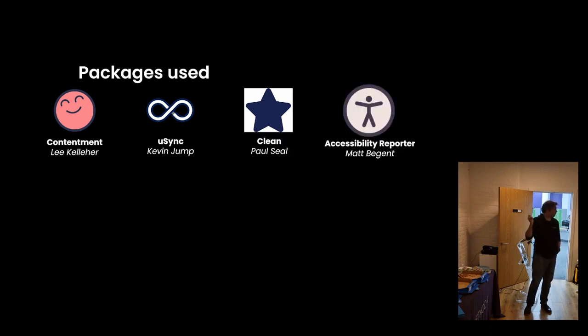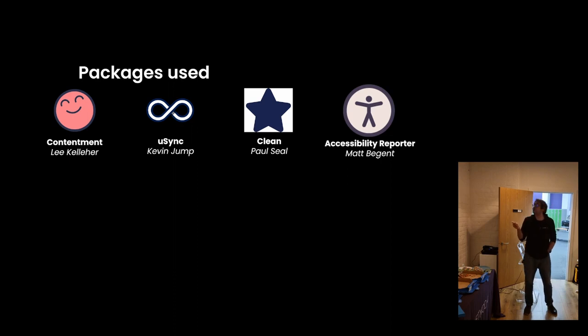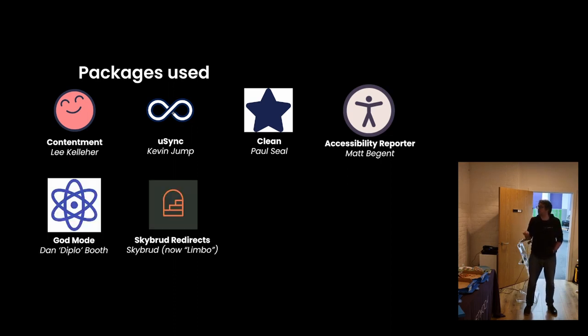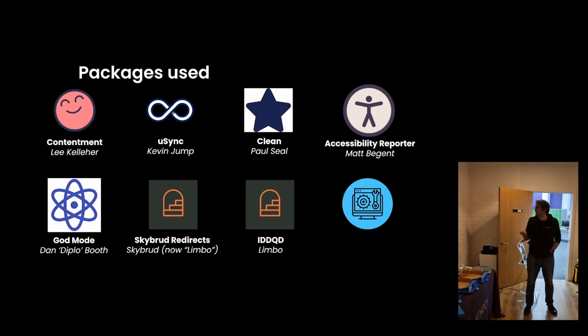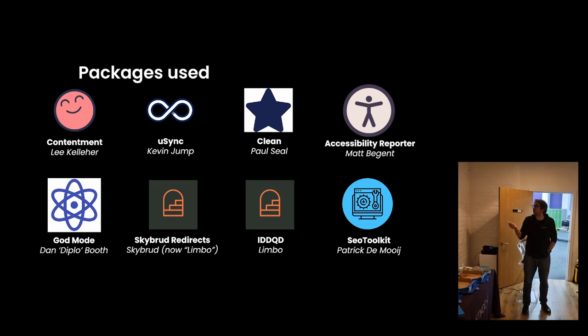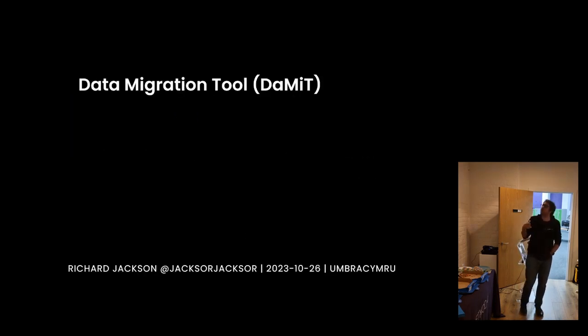Packages used — super quickly: Content Notes, uSync, Clean, and Accessibility Reporter. The Accessibility Reporter is a new one I found out about from Bristol, because Matt did a talk on it, and I think it's the greatest thing ever — it gives you a quick back-office check going through some accessibility things and it's really good, so do check that out. Also God Mode, Skybrud Redirect, IDDQD, and SEO Toolkit — pretty much a standard bunch of free tools.